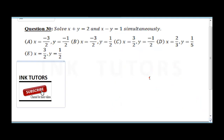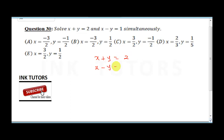Question 30 says solve x plus y equals 2 and x minus y equals 1 simultaneously. This is a simultaneous equation and I prefer to use the elimination method. We'll add equation 1 and equation 2 together.